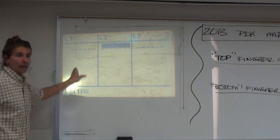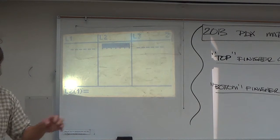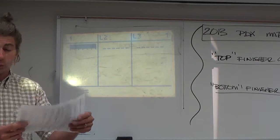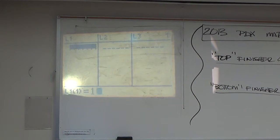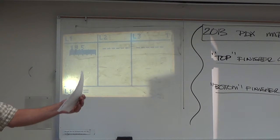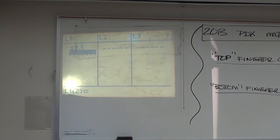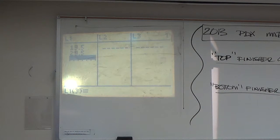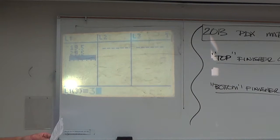Let's put the ages in L1. So we've already agreed that we are going to call the 15 to 24's 19 and a half years of age. We're going to call the 25 to 34's 29 and a half years of age. I know it's going to be tempting to call them 30 or 20, but we don't want to do that. Can anybody see why you don't want to do that?